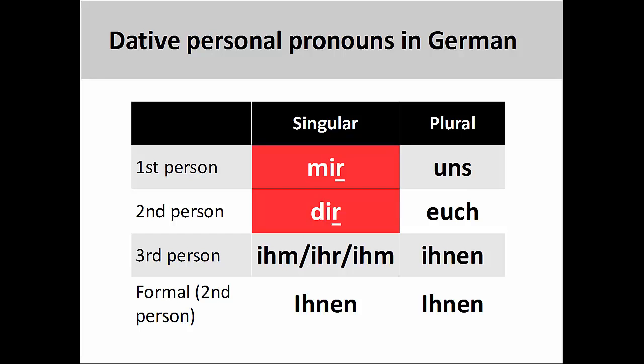The dative first-person and second-person singular forms are mir and dir. You will notice that the first part of these pronouns resemble the accusative forms, but that the dative forms both end in -r. This ending always helps in identifying these pronouns as being dative.